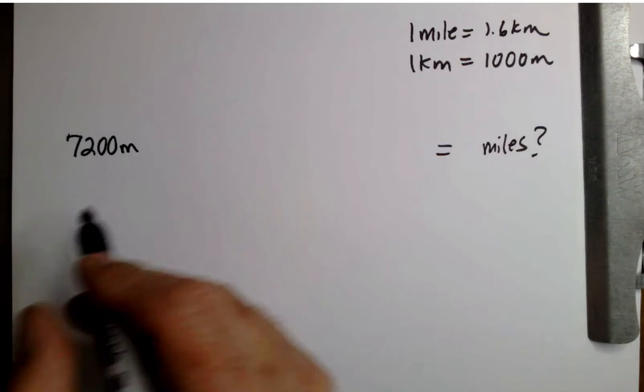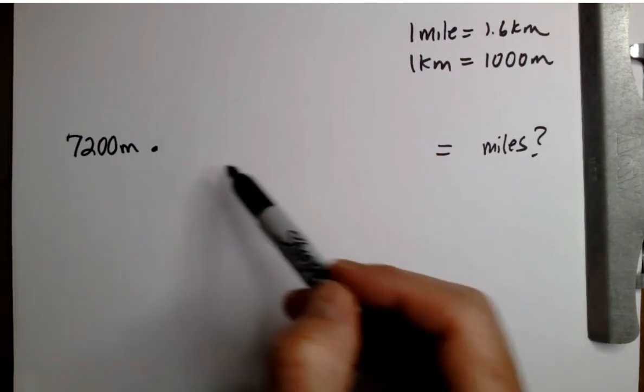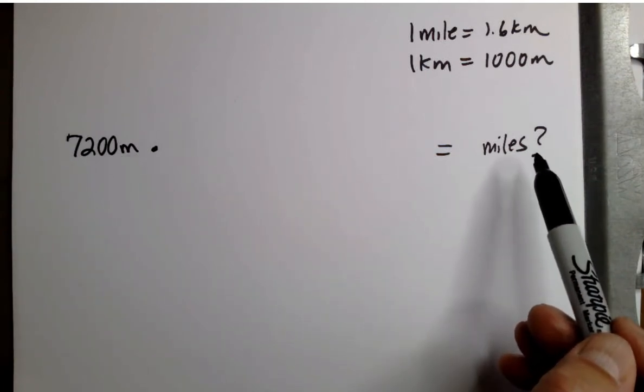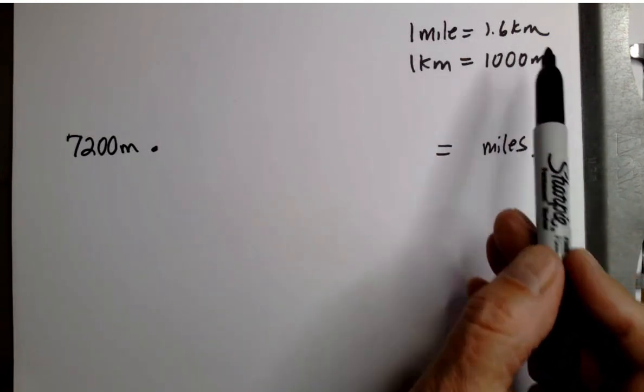This is called dimensional analysis, so let's put a multiplied sign here. So if we're trying to go from meters to miles, then I've got something that connects miles to kilometers.